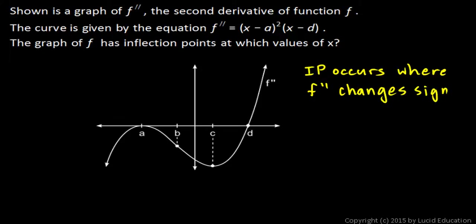But this is worth talking about for a minute, because you can see on this graph, this graph which is the second derivative, you can see two points where the value of the second derivative is zero, right there at x equals a and x equals d. And you can also see this in the equation.